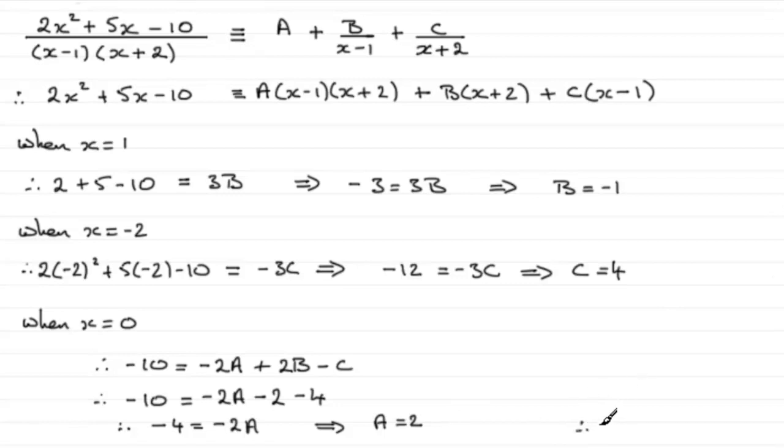So it follows that a equals 2. So in summary then, we could just say that therefore a equals 2, b equals minus 1, and c equals 4. All right?